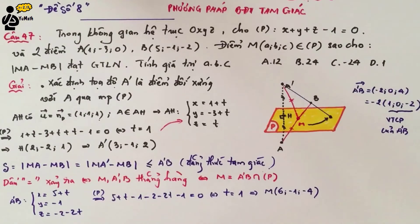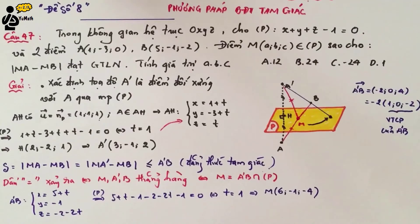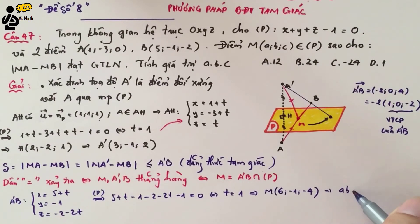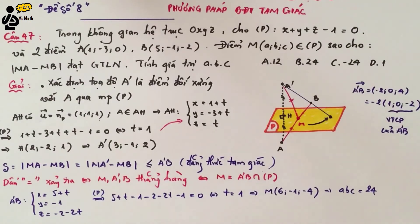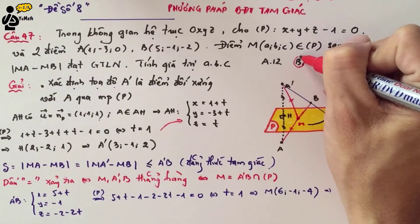Therefore A = 6, B = -1, and C = -4. The product A × B × C = 24. We select answer B.